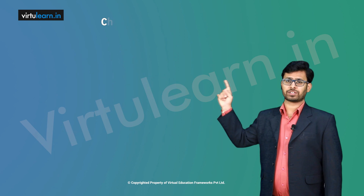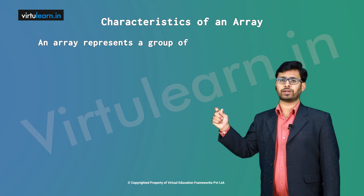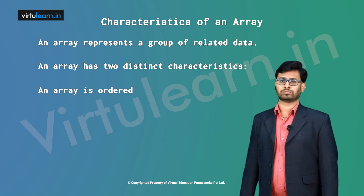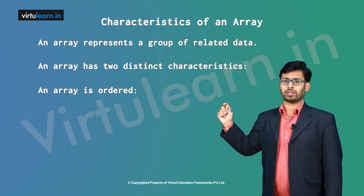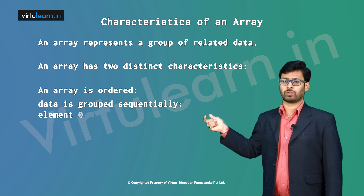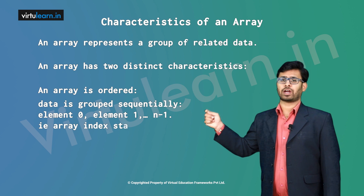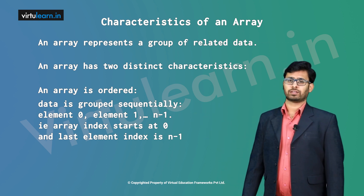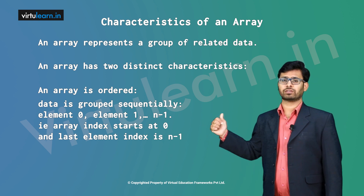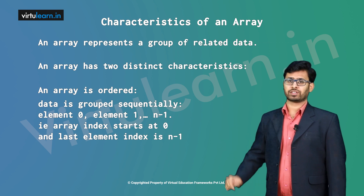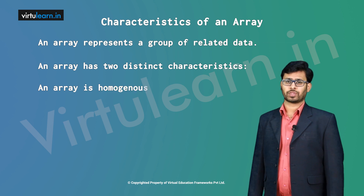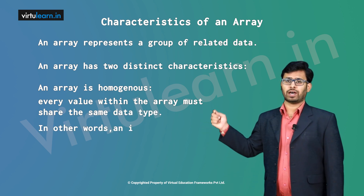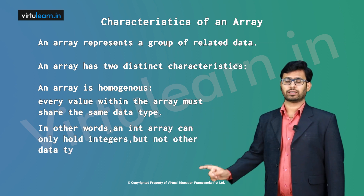Let us see some of the characteristics of an array. An array represents a group of related data and has two distinct characteristics. First, an array is ordered — it is grouped sequentially starting from element index 0, element index 1, till n-1. So the array index starts from 0 and the last element index is n-1. For example, if you have 100 elements, the starting index is 0 and the last element index is 99. Second, an array is homogeneous — every value within an array must share the same data type. An int array can only hold integer values, not any other data type.